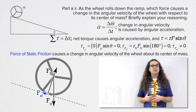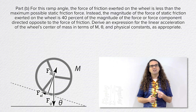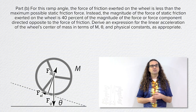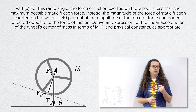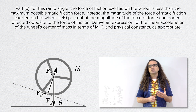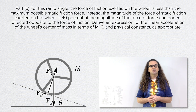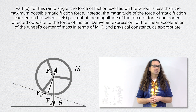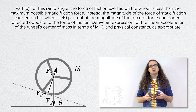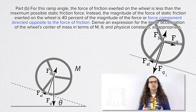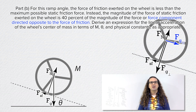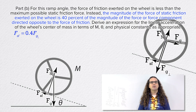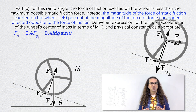Part B: for this ramp angle, the force of friction exerted on the wheel is less than the maximum possible static friction force. The magnitude of the static friction force is 40% of the magnitude of the force component directed opposite to it. Derive an expression for the linear acceleration of the wheel's center of mass in terms of M, theta, and physical constants. The force component directed opposite to friction is the component of gravity parallel to and down the incline. So the static friction force equals 0.4 times M times g times sine theta.